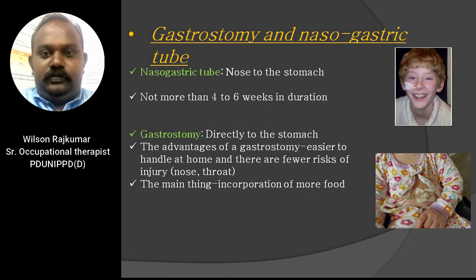Other feeding methods for CP children include the nasogastric tube and gastrostomy. A nasogastric tube is a food route running from the nose to the stomach, recommended when the need for tube feeding is anticipated to be no more than 4 to 6 weeks and there is no gastroesophageal reflux. If longer than 4 to 6 weeks is anticipated, a gastrostomy is preferred. A gastrostomy is a food route that goes directly to the stomach. Its advantages include being easier to handle at home, fewer risks of injury to the nose or throat, and allowing more food intake compared to the nasogastric tube.